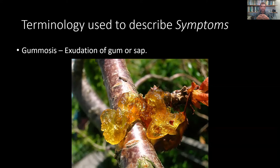If you see the exudation of sap or a sticky gum-type material, that is known as gummosis. That's how you would diagnose that problem — you've got gummosis if you are oozing sap. Clearly, that's something to observe and take into account in an overall situation to arrive at a proper diagnosis.